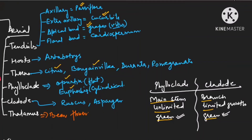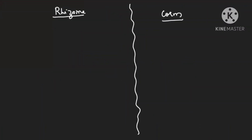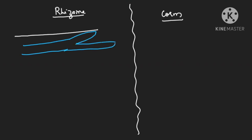Now let me explain the difference between rhizome and corm. For rhizome — taking ginger as example — this is the underground stem going for branching, with nodes and long internodes. At every node, adventitious roots are coming out. The rhizome grows horizontally in the soil.